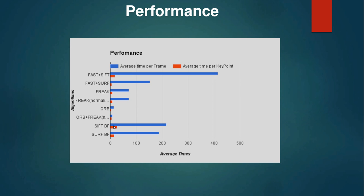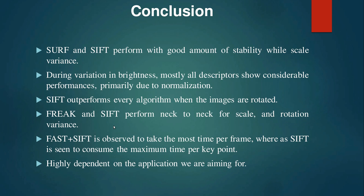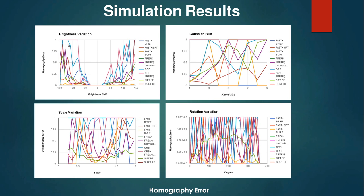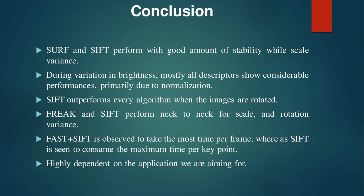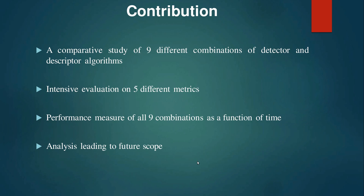In conclusion, SURF and SIFT perform with good stability during scale variation, and during brightness variation most descriptors show considerable performance due to normalization. SIFT outperforms every algorithm when images are rotated. FREAK performs neck-to-neck with SIFT for scale and rotation variance. FAST and SIFT takes the most time overall, and SIFT consumes the maximum time per keypoint. Ultimately, different algorithms have different performances depending on the situation, so the choice completely depends on the target application.